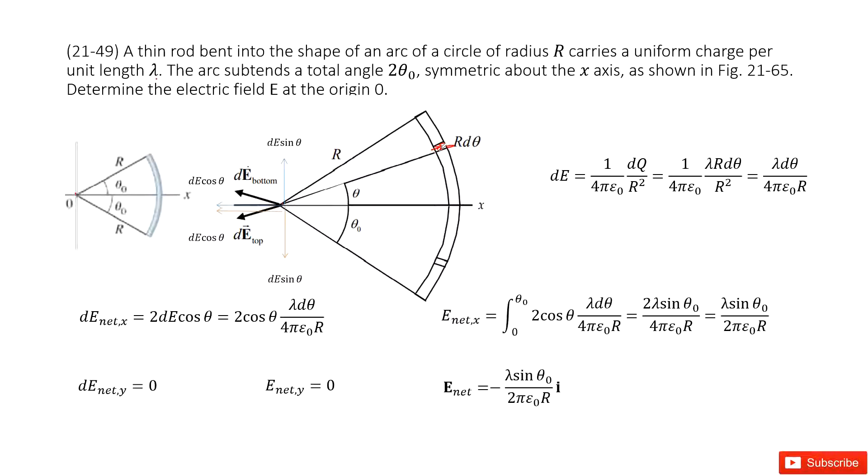Then we get dE top and dE bottom. Because this is mirror symmetry, for this one we can draw the electric field dE top from top. You can see it's a vector. And then we can see this is called theta, and this side is also another theta. And then project dE top in x component and in y component. So we can see x component is cosine theta, y component is dE sin theta.